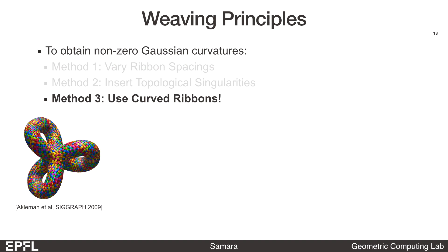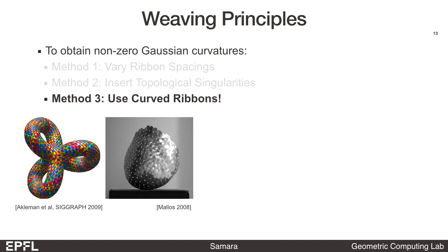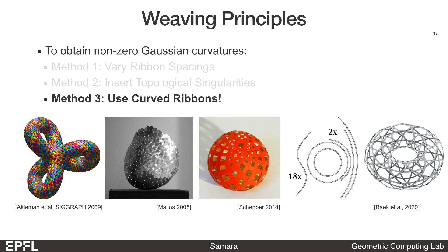The idea of using curved ribbons has also been explored in various contexts. Akleman and colleagues proposed a method to compute dense weaving patterns. A related geometric strategy was also explored by James Mallos. This woven sphere is designed by Anna and Lana Shepard using manually drawn curves. Recently, some colleagues from the mechanical engineering department at EPFL and MIT have proposed the parametric unicell approach to assemble woven structures using a combination of straight ribbons and circular arcs.